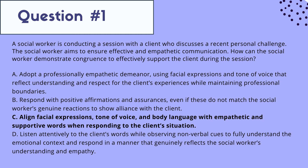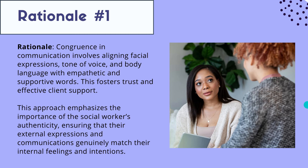C is the correct answer because it's all about attunement with congruence and matching the client's body language and voice level. Congruence involves aligning facial expressions, tone of voice, and body language with empathetic and supportive words — this fosters trust and effective client support. Working with children, if they have big energy I meet them with big energy, and we sometimes modulate together. It allows us to be genuine and shows authenticity. We don't need to be upbeat and cheery for every interaction — we need to match their feelings and intentions while staying in line with our own.